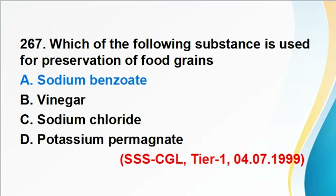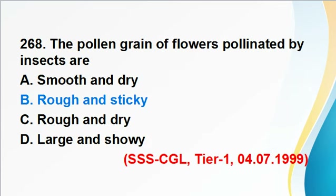Question 267: The substance used for preservation of food grains is sodium benzoate. Answer A is correct. Sodium benzoate is the sodium salt of benzoic acid and is used for the storage and preservation of food grains.